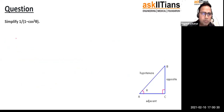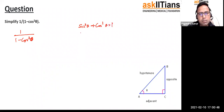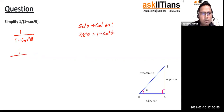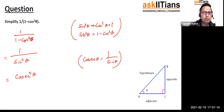Let's do a simple question. Simplify: 1/(1 − cos²θ). We know the identity sin²θ + cos²θ = 1, so taking cos²θ to the other side: sin²θ = 1 − cos²θ. Substituting, we get 1/sin²θ, which is cosec²θ, because cosec θ = 1/sin θ. So we simplified it to cosec²θ.